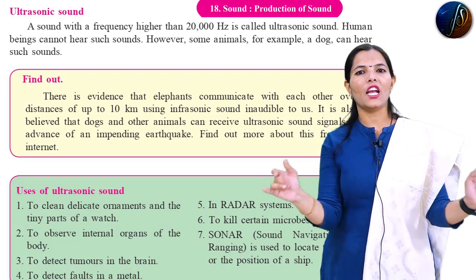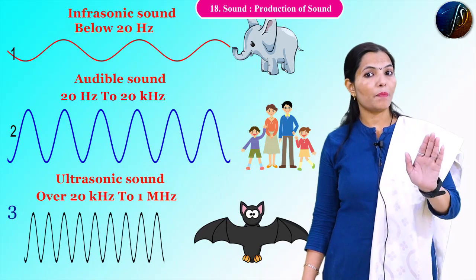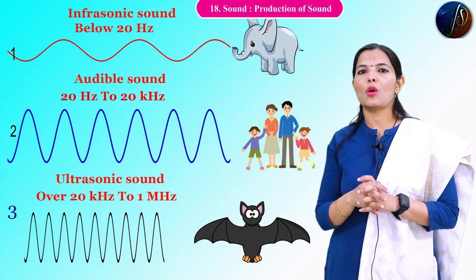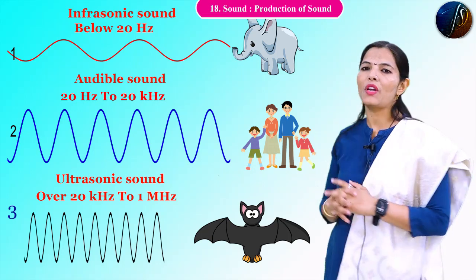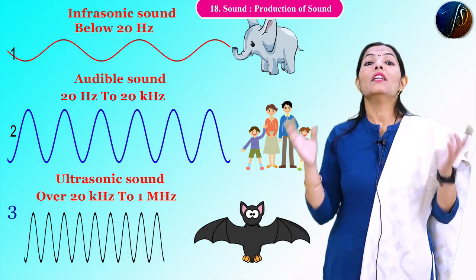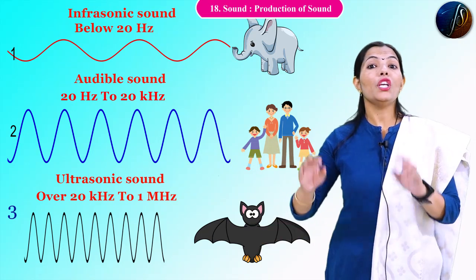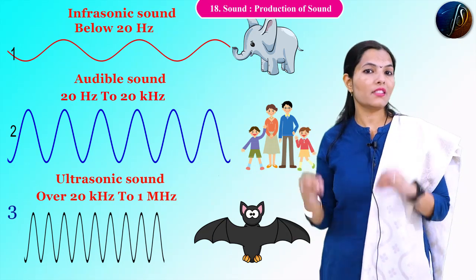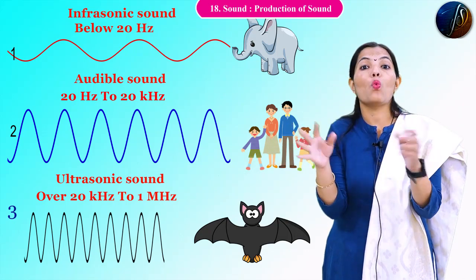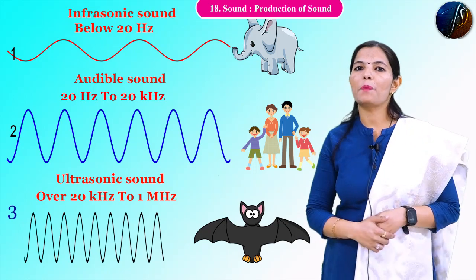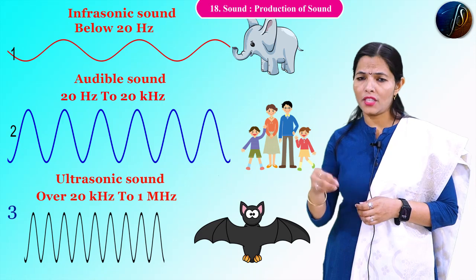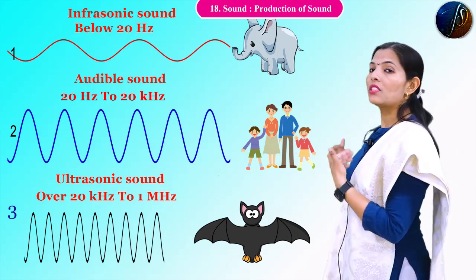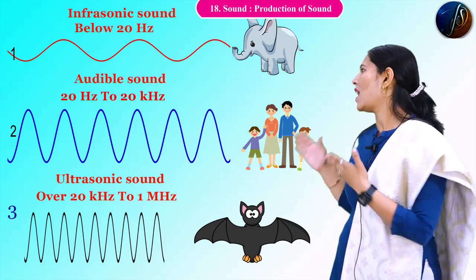To summarize: infrasonic sound has a frequency less than 20 Hz, and audible sound has a frequency between 20 Hz to 20,000 Hz. The last type is ultrasonic sound — the sound which has a frequency of more than 20,000 Hz is called ultrasonic sound.